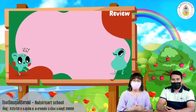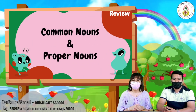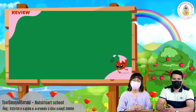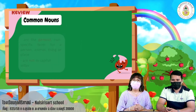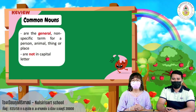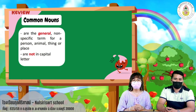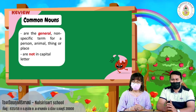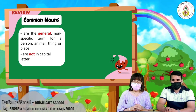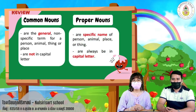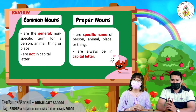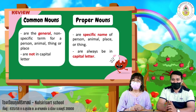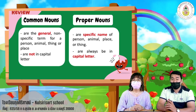Now let's review. Common nouns are the general non-specific term for a person, animal, thing, or place — and they are not in capital letters. Proper nouns are the specific name of a person, animal, place, or thing — and proper nouns are always written in capital letters.